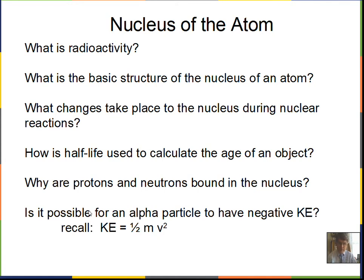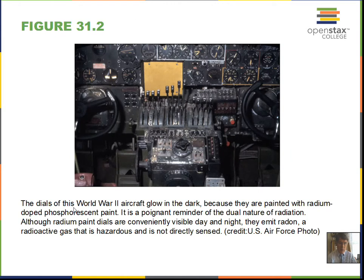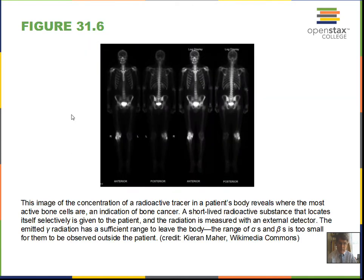The dials on old aircraft — and watches used to be made this way as well — glow in the dark because of the radioactivity they're painted with. The radium decays, the alpha particle makes the paint phosphoresce and give off light. It's actually hazardous in terms of the radioactivity, especially for the people who painted these dials and would dip their paintbrush on their tongue to sharpen it. But now we know better.